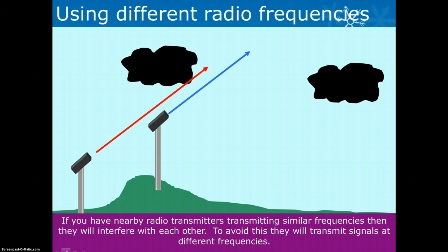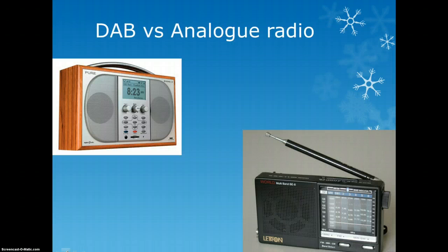This brings us to DAB - digital radios versus analog radios. The advantages of DAB is that you can have more stations because it's easier to separate them out, and you get less interference between stations.